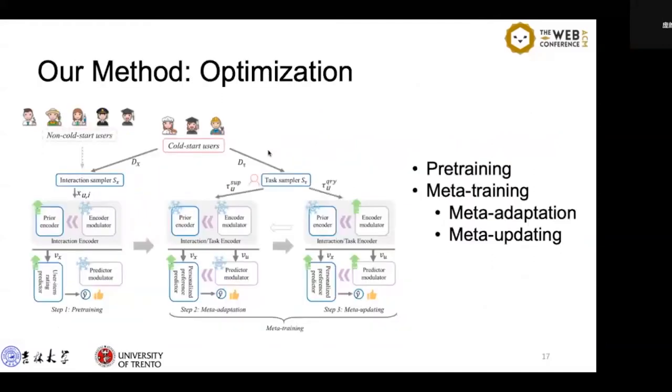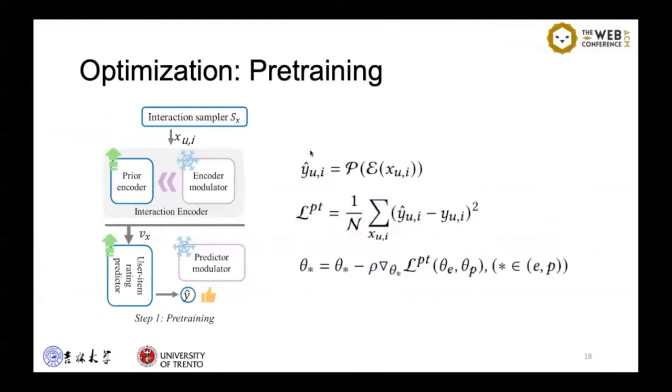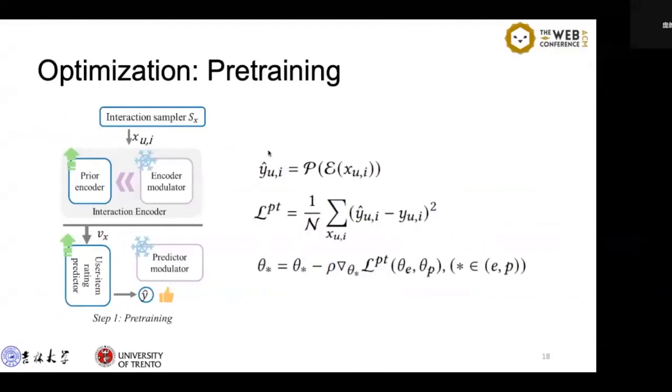The optimization process of the model consists of two parts: pre-training and meta-training. During pre-training, the training data is randomly sampled in units of interaction pairs. The model is optimized by computing the mean squared error. In the end, we only keep the parameters of the encoder and transfer it to the following meta-training stage.